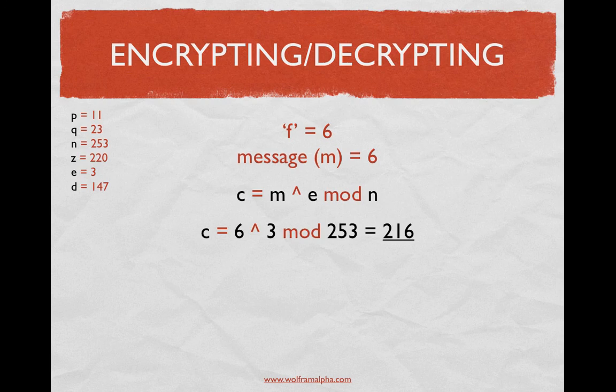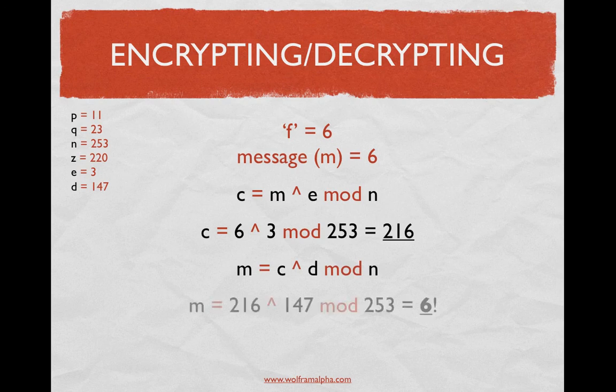In order to decrypt this, you need D, which we figured out earlier. The decryption equation is: M equals C raised to the D, mod N. Plugging in the values: C is 216, raised to D which is 147, mod 253, which equals 6. The value 6 is your original message. Once you have the cipher keys, you can determine that 6 stands for the letter F.